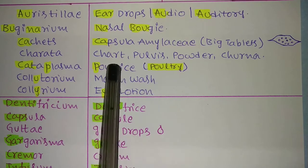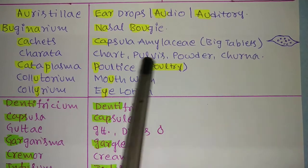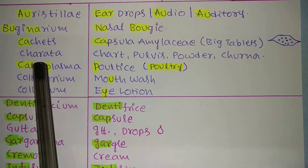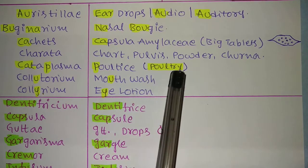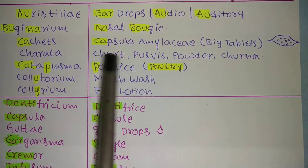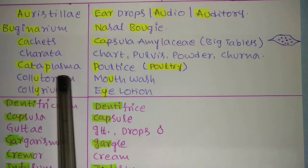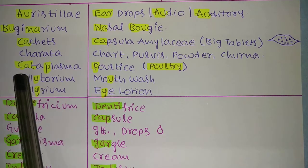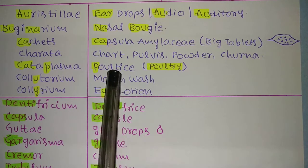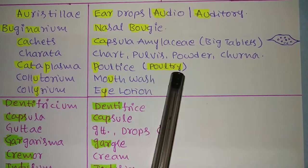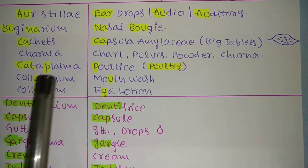Next is 'Charta,' which means chart, pulvis, powder, or churna — all having the same meaning. Generally we pack powder in chart paper in laboratories, so you can remember 'Charta' = chart = powder easily. Next is 'Cataplasma,' which means a poultice. It sounds like 'poultry,' which is a hen. You can also find 'cat' in Cataplasma. So cat and hen — like that you can remember Cataplasma = poultice.